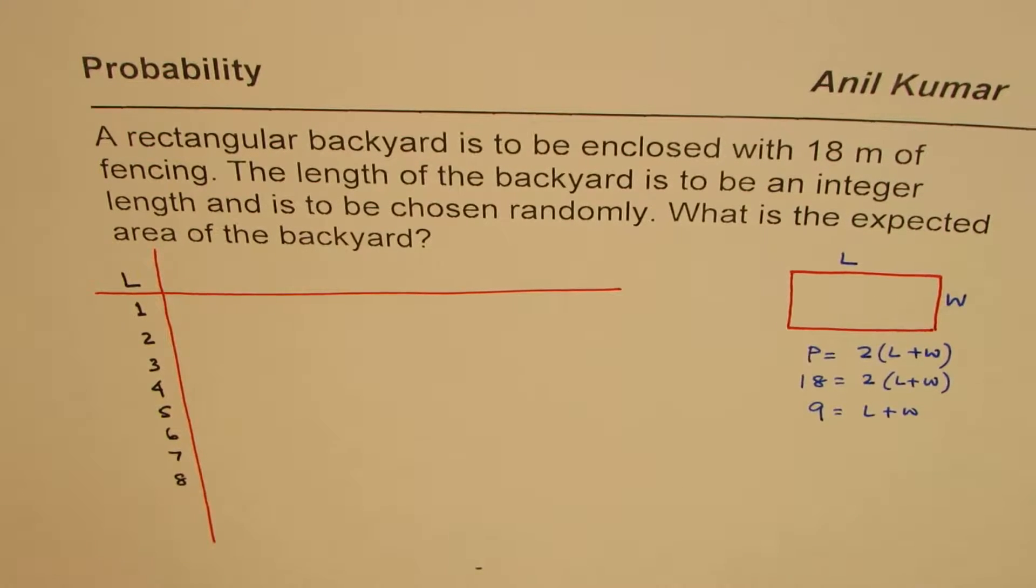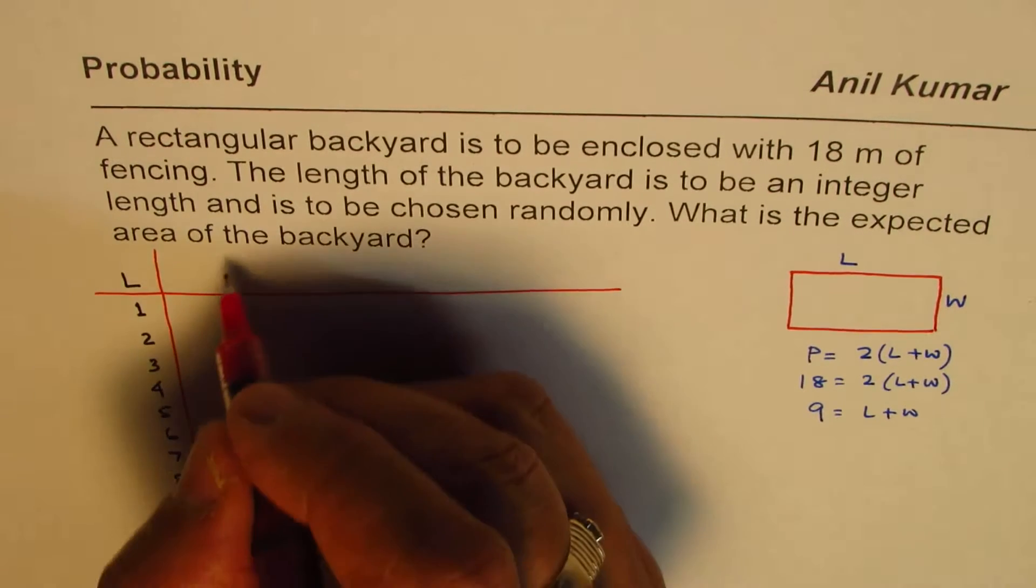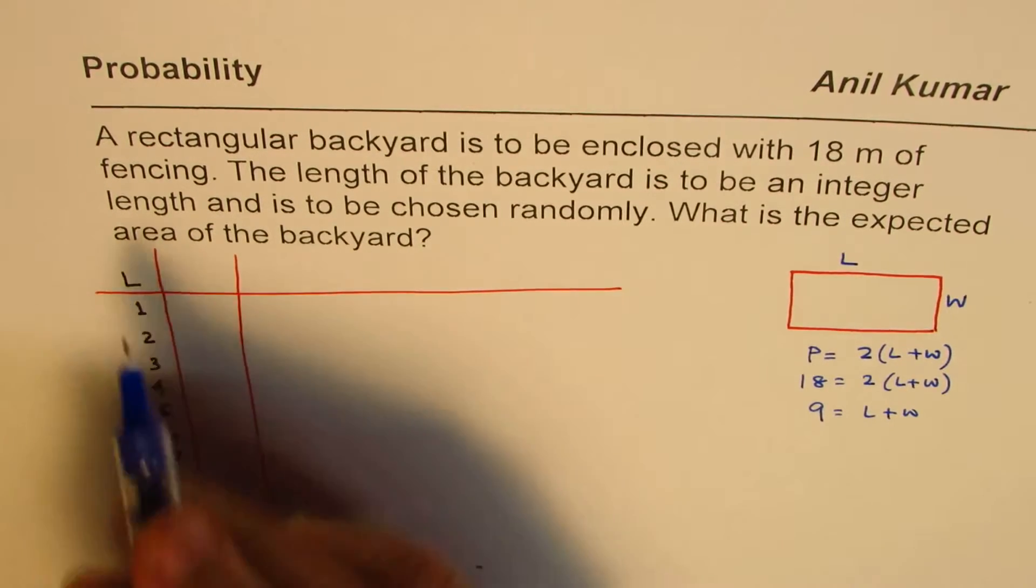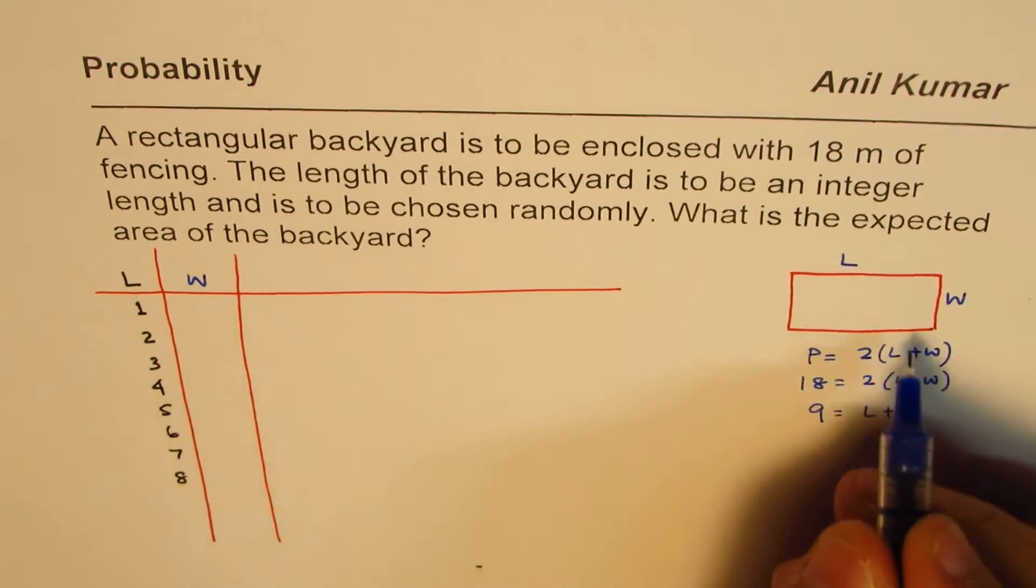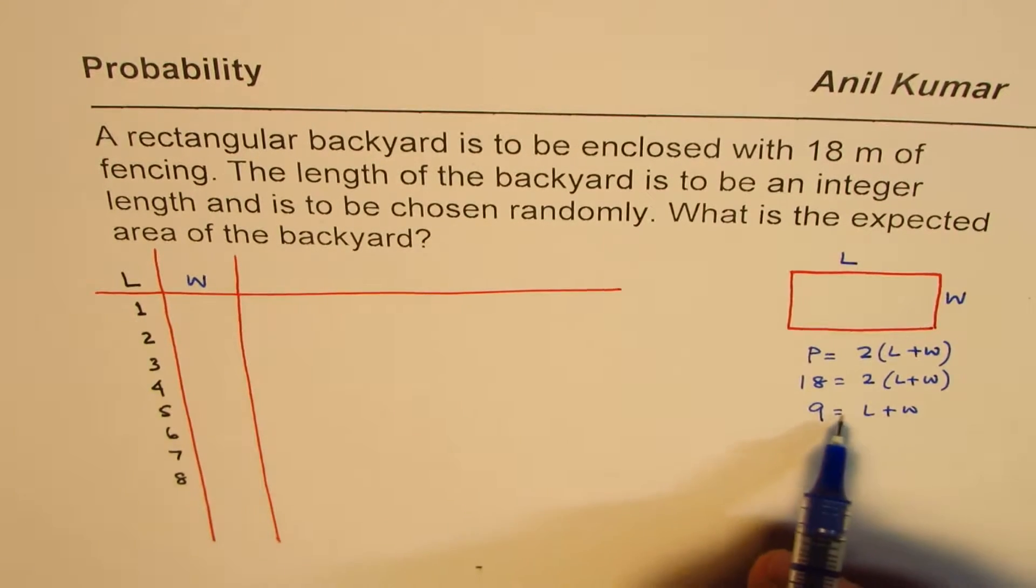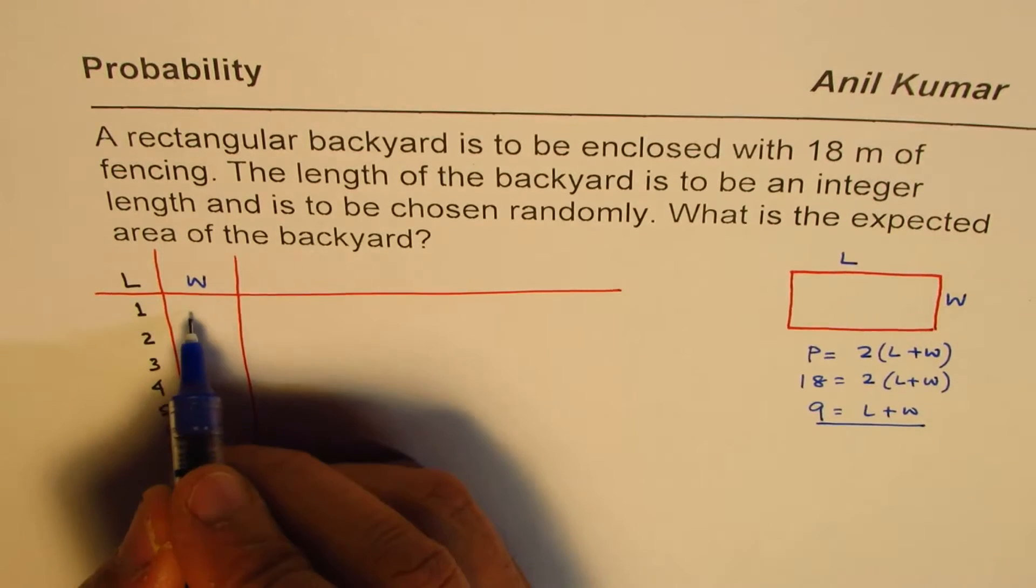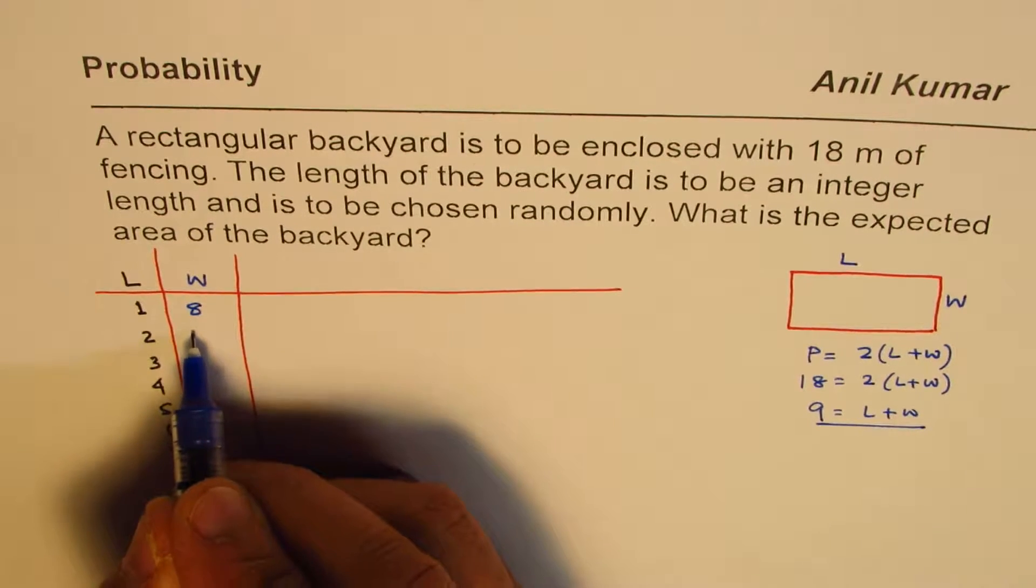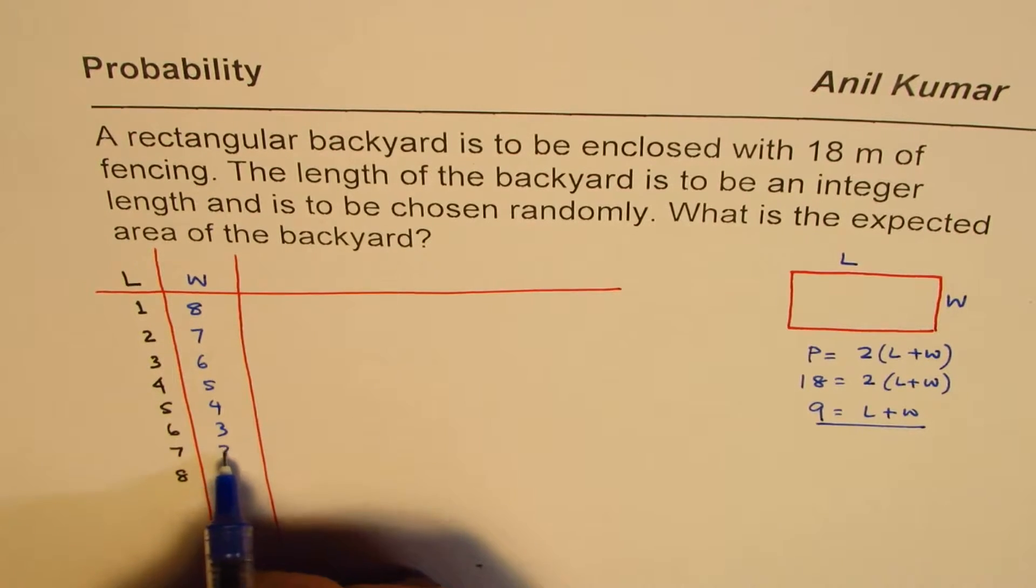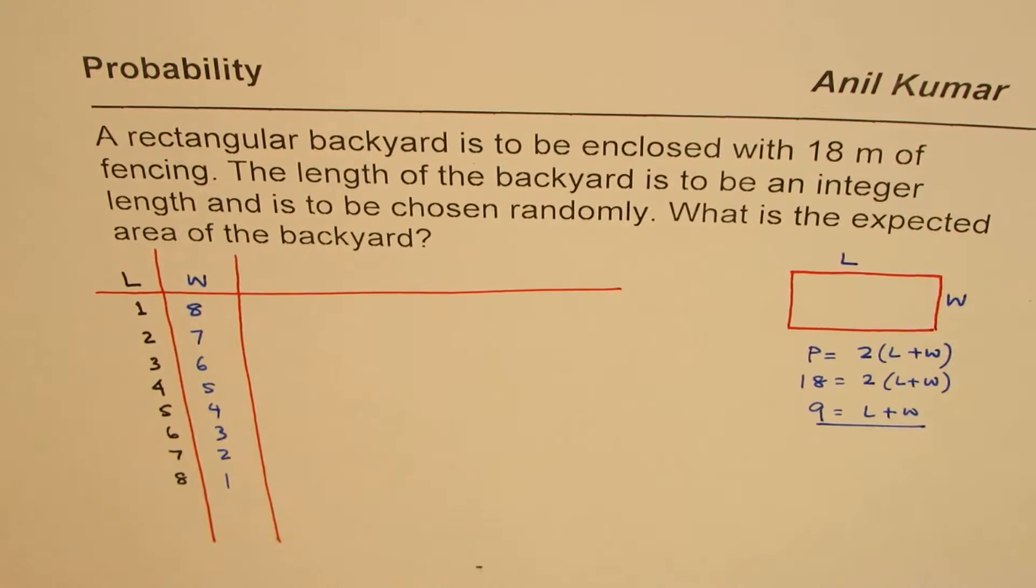And this sum with width. So I'll make another column here also where I'll write width. That will help me to find the area. So if length is 1, width should be 8 because the sum is 9. So this would be like 8, 7, 6, 5, 4, 3, 2, 1. So we get width.